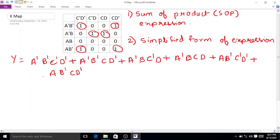Then next, to find the simplified form, we have to group the number of ones in our K-map.